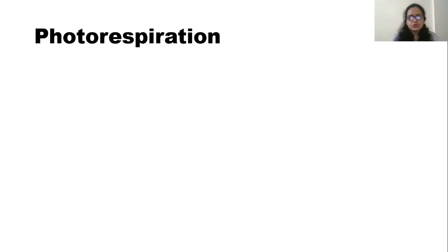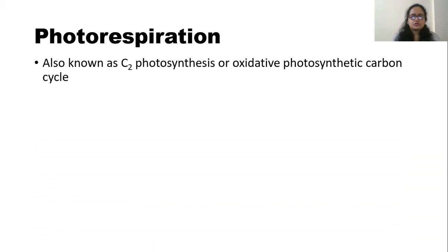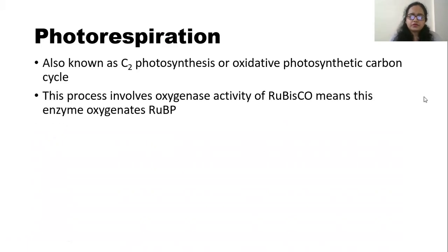This process is also known as the C2 photosynthetic cycle, or oxidative photosynthetic carbon cycle. This process involves the oxygenase activity of the RuBisCO enzyme, meaning this enzyme oxygenates RUBP. RuBisCO's full name is ribulose 1,5-bisphosphate carboxylase oxygenase, and hence this enzyme has both carboxylase and oxygenase activity.